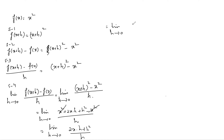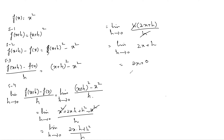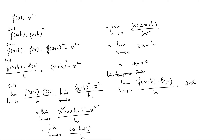Taking out h from the numerator gives h(2x + h) / h, the h cancels, leaving limit h→0 of (2x + h). Applying the limit, h goes to zero, so the result is 2x. Therefore, the derivative — defined as limit h→0 of [f(x+h) - f(x)] / h — equals 2x, which is the derivative of x².